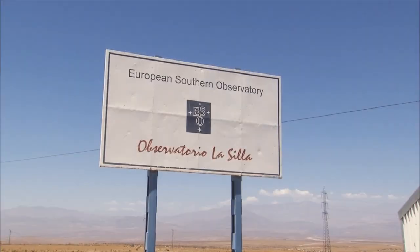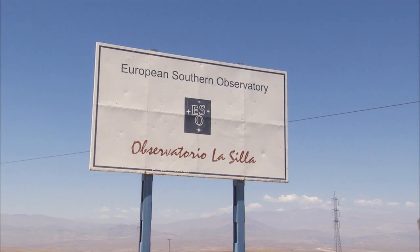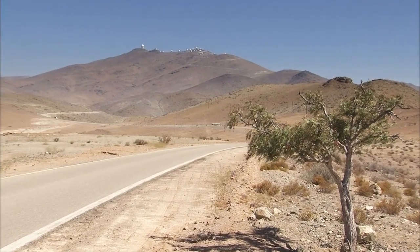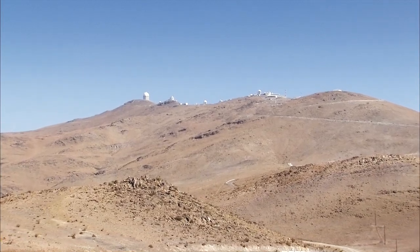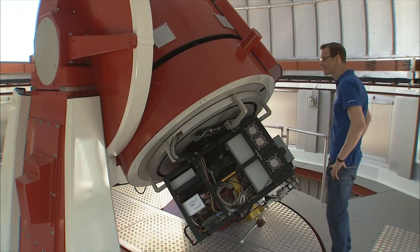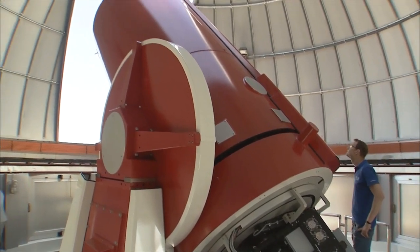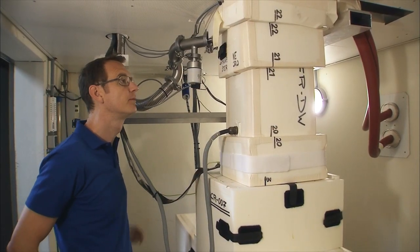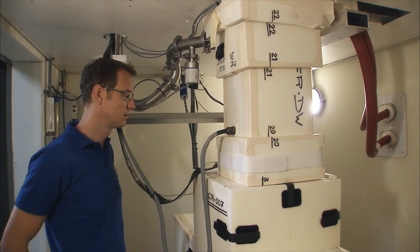The European Southern Observatory plays an important role in the search for exoplanets. Michel Mayor's team found hundreds of them from Cerro La Silla, ESO's first Chilean foothold. Here's the Coralie spectrograph, mounted on the Swiss Leonard Euler Telescope. It measures the tiny wobbles of stars caused by the gravity of orbiting planets.